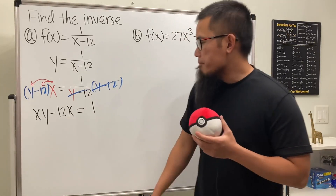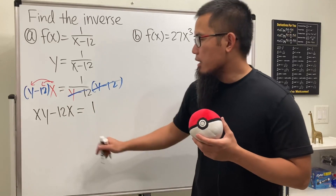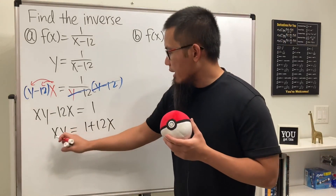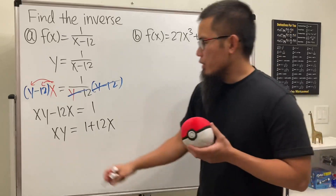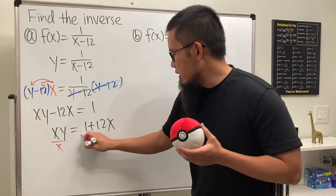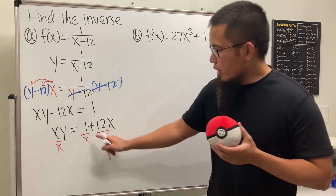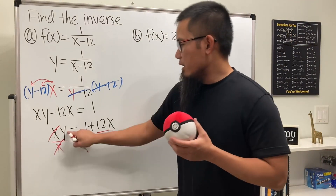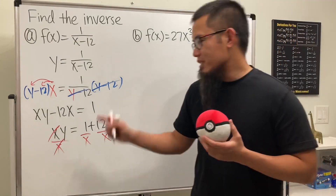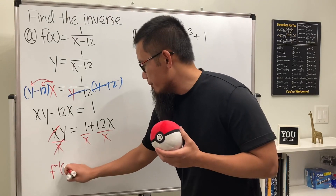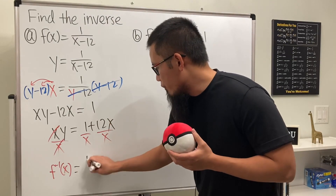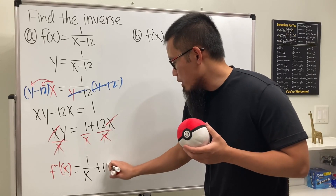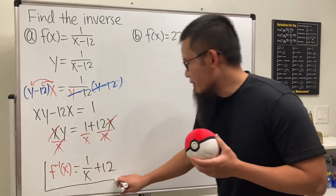We just have to isolate y. Let's move the 12x to the other side, so we get xy equals 1 plus 12x. Lastly, divide both sides by x — you can divide everyone by x individually or put the big fraction bar over x. We cancel the x on the left and y is isolated. So the inverse is 1 over x plus 12x over x, and since 12x over x cancels, we get 1 over x plus 12.